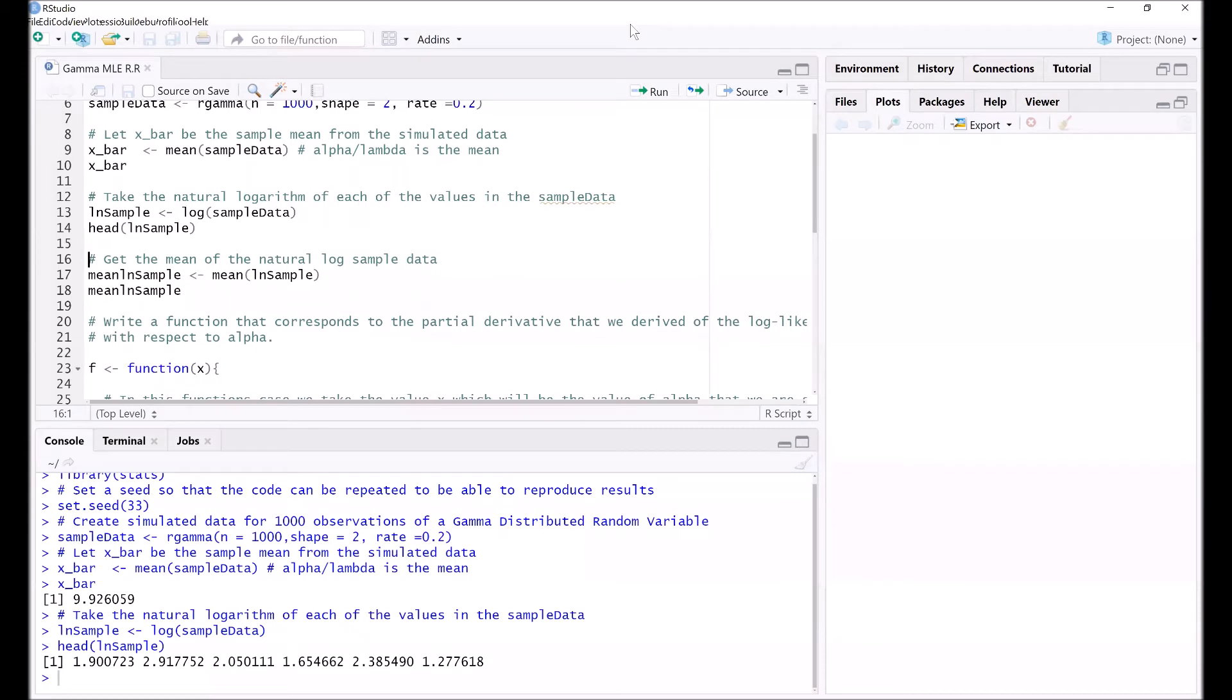The reason we need x-bar and the log of the sample data is because we are interested in the term ln of x-bar, which is the natural logarithm of x-bar, and we also need the term mean of natural logarithm x, the mean of the natural logarithms of x. That's why we are getting the natural logarithm of x, so that we can calculate the means of the natural logarithms of our sample data. Then these values we will use and plug into the equation that we derived in the previous video.